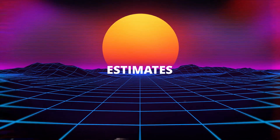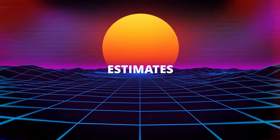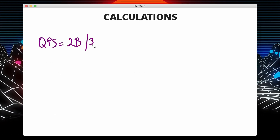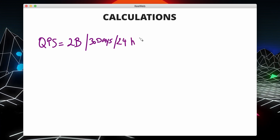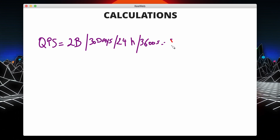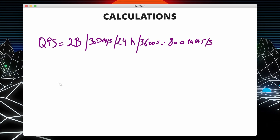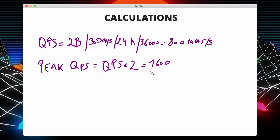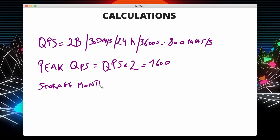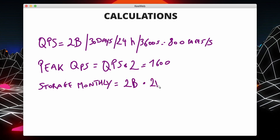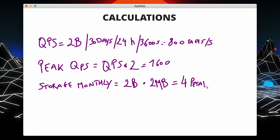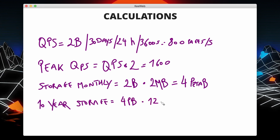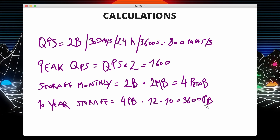Let's do some estimates to calculate the load and storage required by our system. We will need to make some assumptions that you can discuss with your interviewer. Assuming 2 billion pages are scanned every month, the queries per second will be around 800 pages per second. The peak will be twice the average, so 1600 queries per second. Assuming the average web page size is 2 megabytes, the monthly storage required will be 4 petabytes, and assuming data is stored for at least 10 years, we will need at least 3600 petabytes for the whole period.